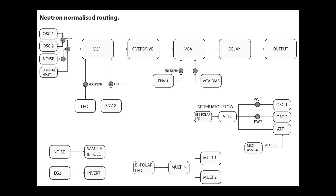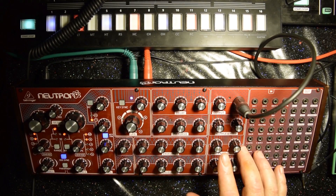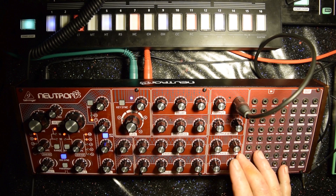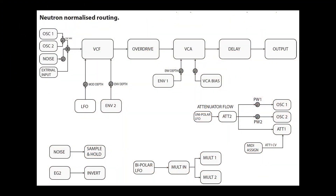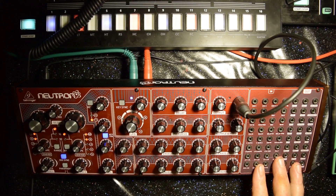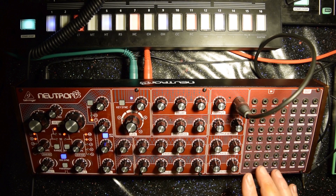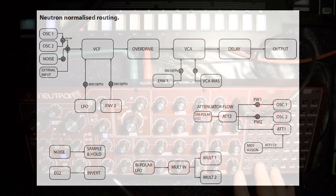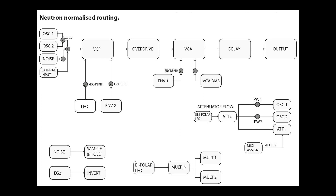The unipolar LFO is routed to attenuator 2, from where the signal splits three ways to pulse width 1 and 2, going to oscillators 1 and 2, and to attenuator 1. The bipolar LFO is routed by default to the MULT in and then out through MULT 1 and 2, assuming nothing else has been plugged in. Noise is also by default patched into Sample and Hold, and EG2 is patched to invert on the default routing.